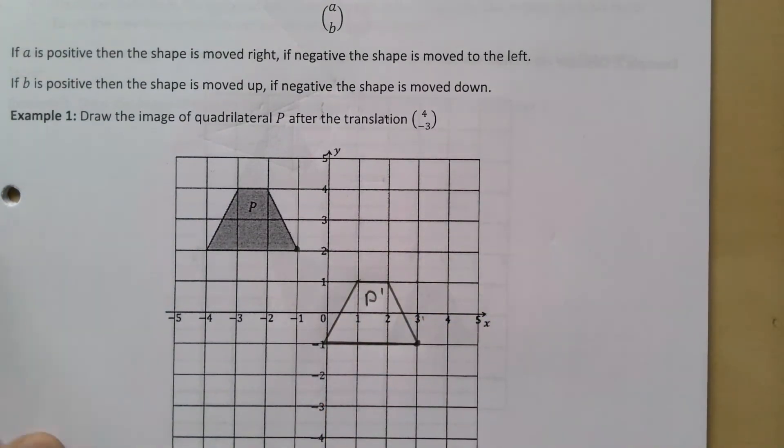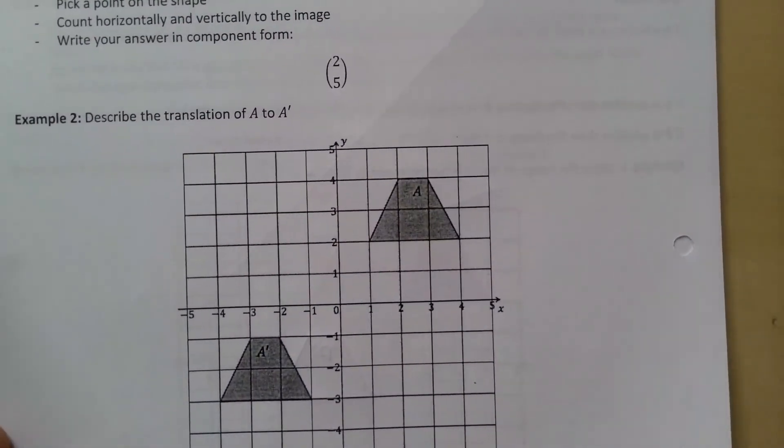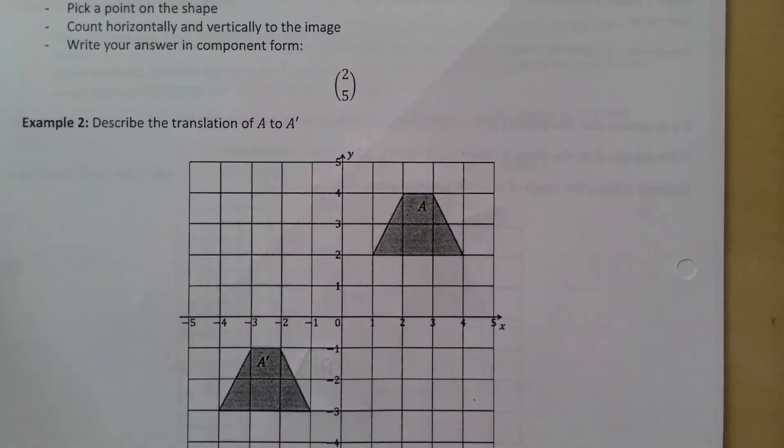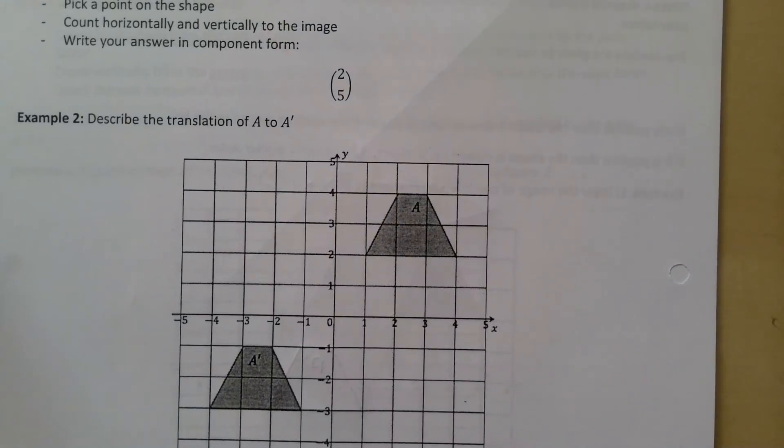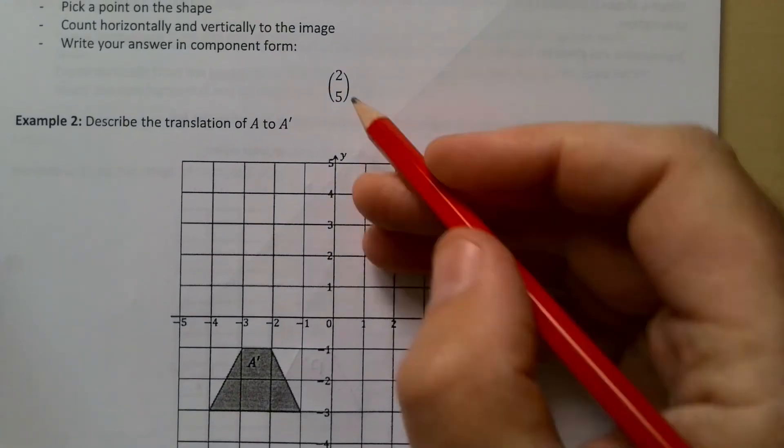And you can do all of this in backwards as well. So describe a translation - pick a point on the shape, count horizontally and vertically to the image, write your answer in component form.